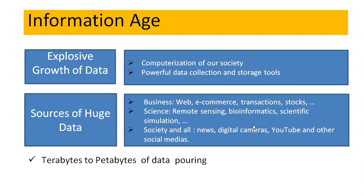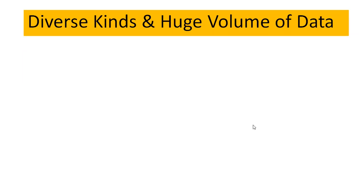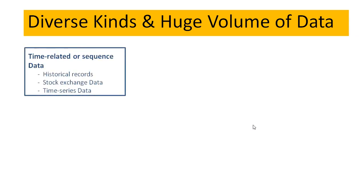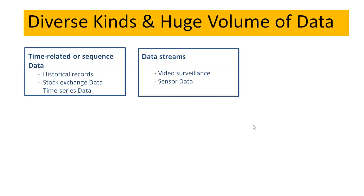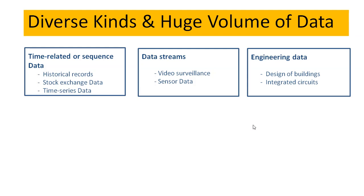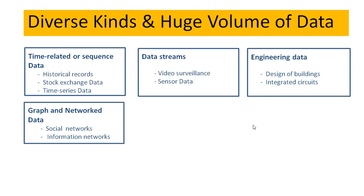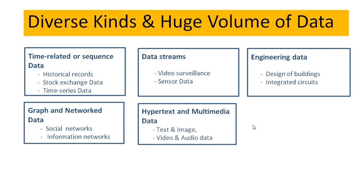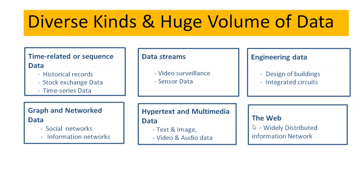Due to this explosive growth, the problem with this data age is there are terabytes to petabytes of data pouring in but there is lack of knowledge from the data. Besides relational database data, there are many other kinds of data with diverse forms and structures — for example, time-related or sequence data like historical records, stock exchange data, and time series; streaming data continuously transmitted like video surveillance and sensor data; engineering data like designs of buildings and integrated circuits; graph and network data from social networks like Facebook, Twitter, and LinkedIn; hypertext and multimedia data like image, video, and audio; and finally the web, a widely distributed information network.